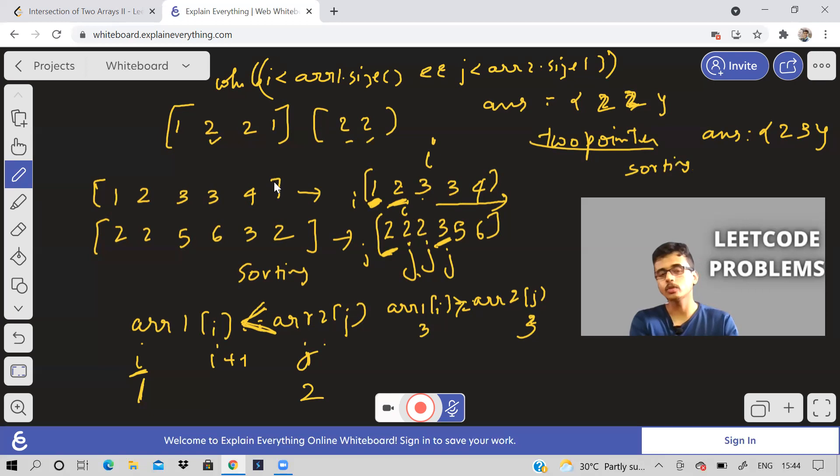So this two pointer method with sorting will work. Now if you use map method, you will take O of n time also. But in sorting method, you will take n log n time and O of one space. So if the constraint was 10 power 5, that is number of elements n 10 power 5 or anything, then go for sorting. Otherwise, you can go for brute force only actually.